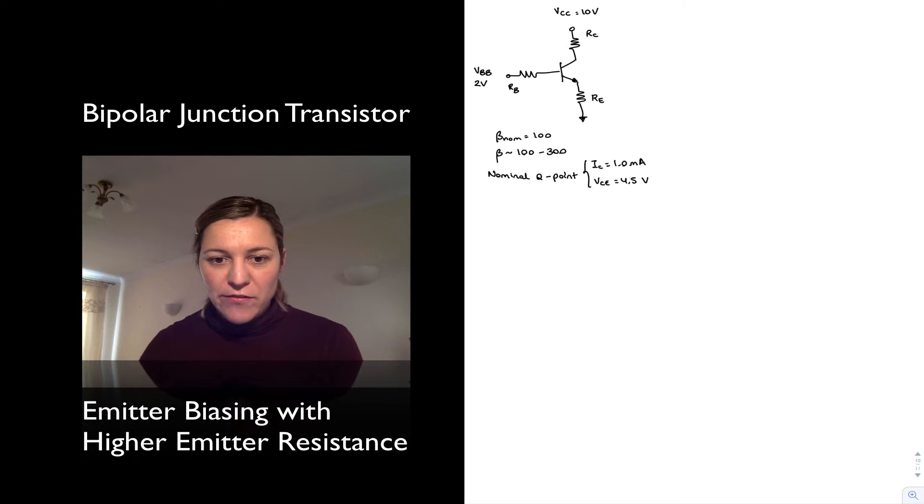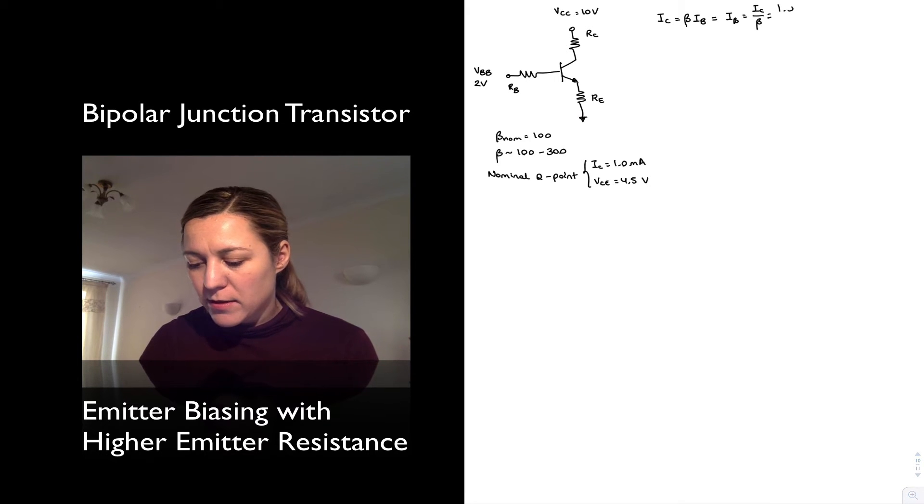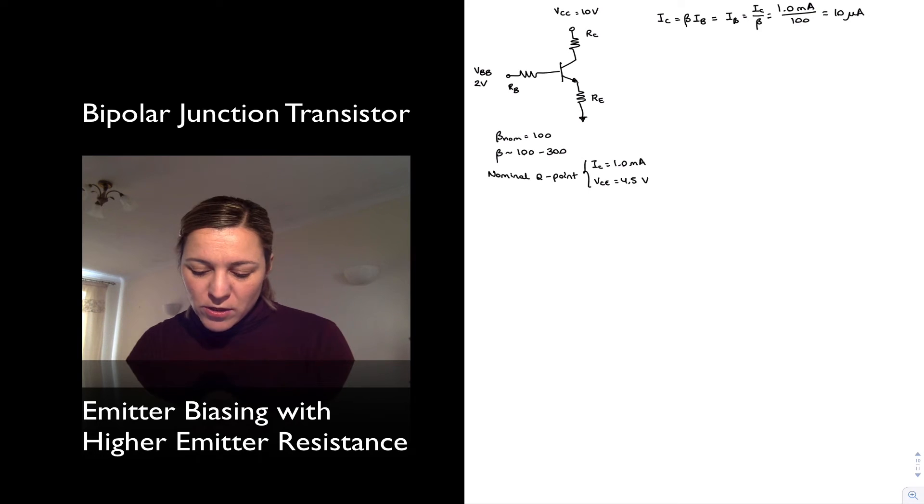Let's redo some of the calculations. IC is equal to beta times IB, therefore the value of my IB is IC over beta or 1 milliamp over 100, which is 10 microamps.